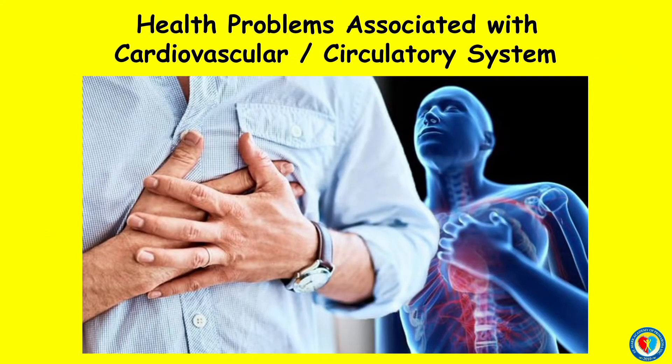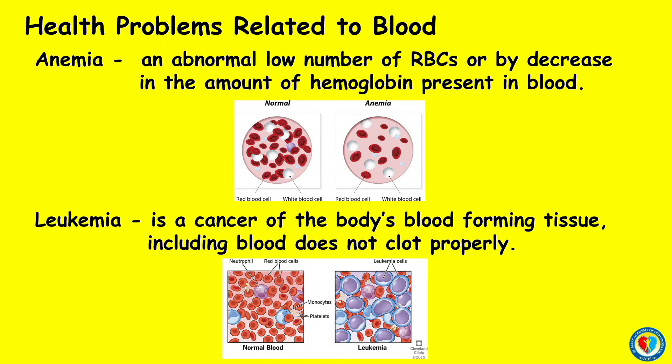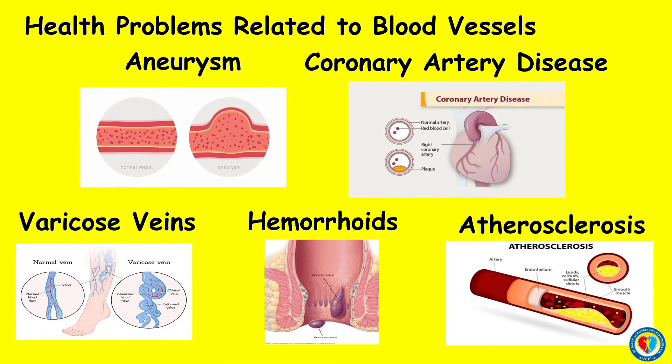Here are some health problems associated with the cardiovascular or circulatory system. First, let's talk about health problems related to blood. Anemia is an abnormally low number of red blood cells or a decrease in the amount of hemoglobin present in the blood. Leukemia is cancer of the body's blood-forming tissues.